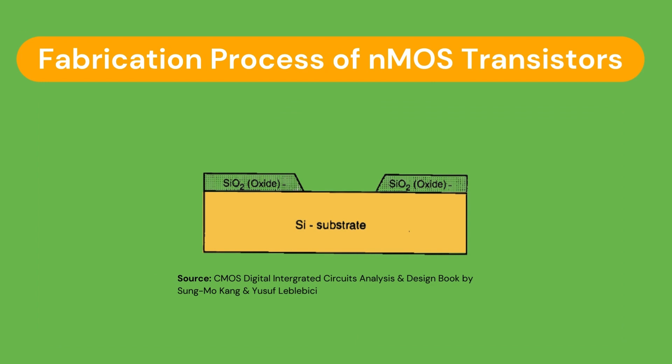Starting where we left off in our last video, the process starts with the oxidation of the silicon substrate, in which a relatively thick silicon dioxide layer called the field oxide is created on the surface of the silicon substrate, which is primarily a P-type substrate. The silicon dioxide layer is used as an insulator in semiconductors. The field oxide is selectively etched to expose the silicon surface of the P-type silicon semiconductor on which the MOS transistor will be created.